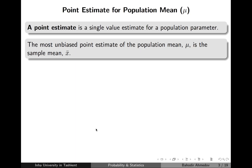Let's start with the point estimate. The point estimate is the estimation of the population mean using a single value, and the most unbiased point estimate of the population mean would be simply the sample mean.